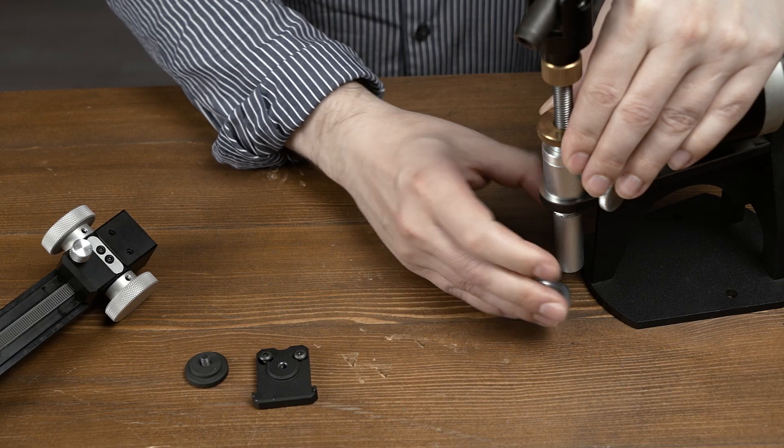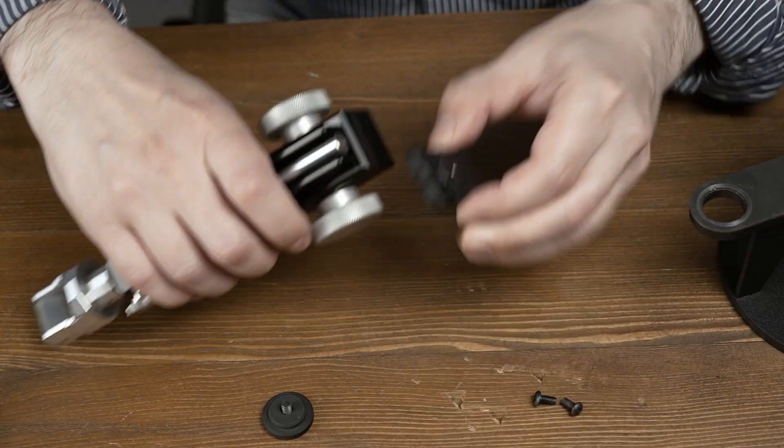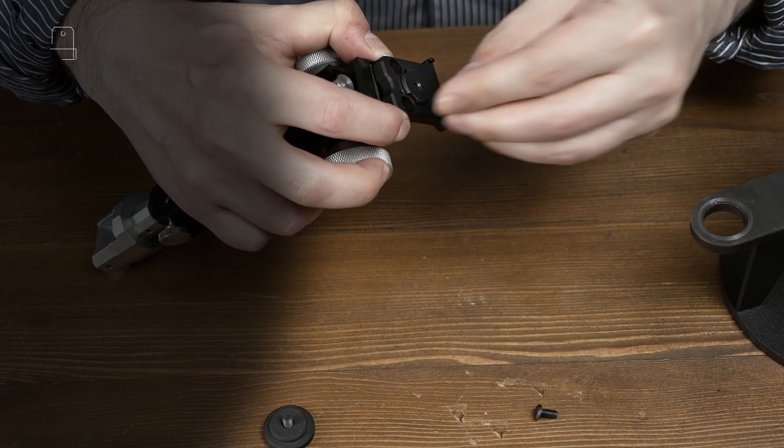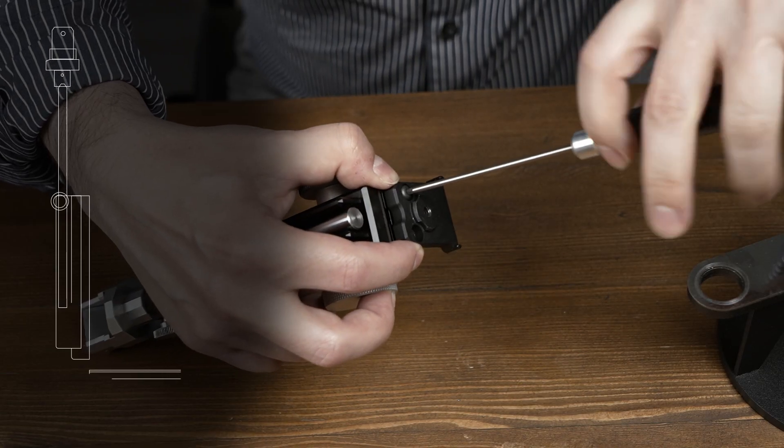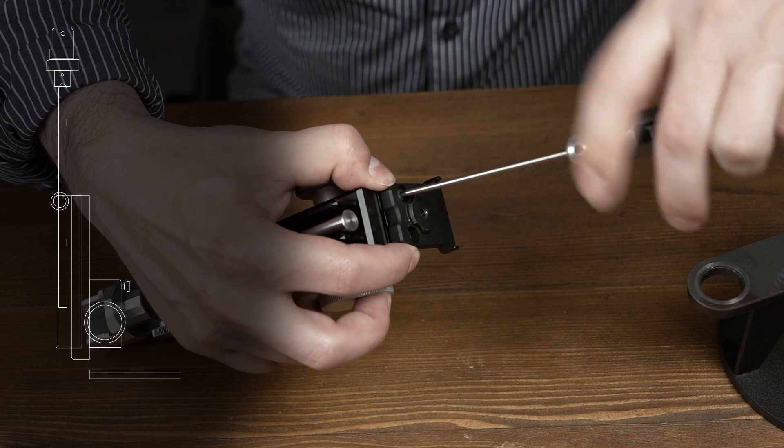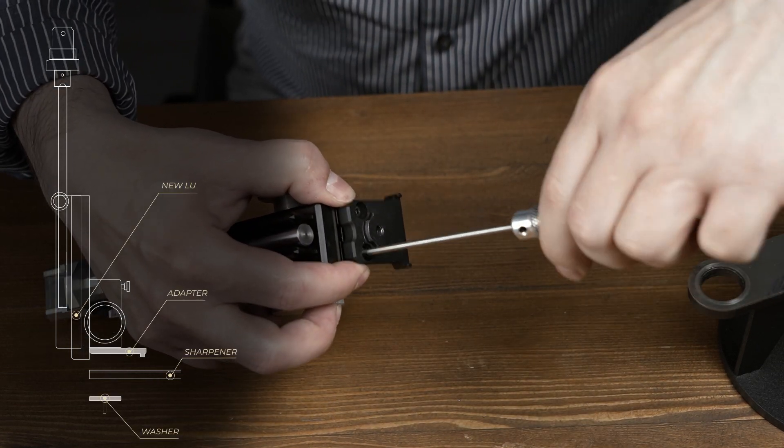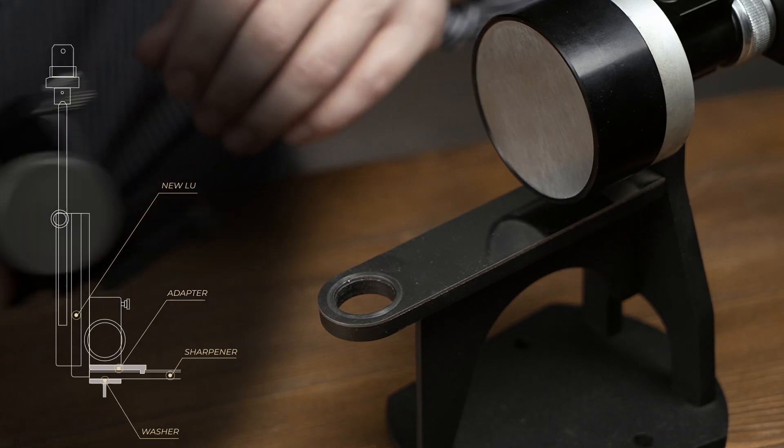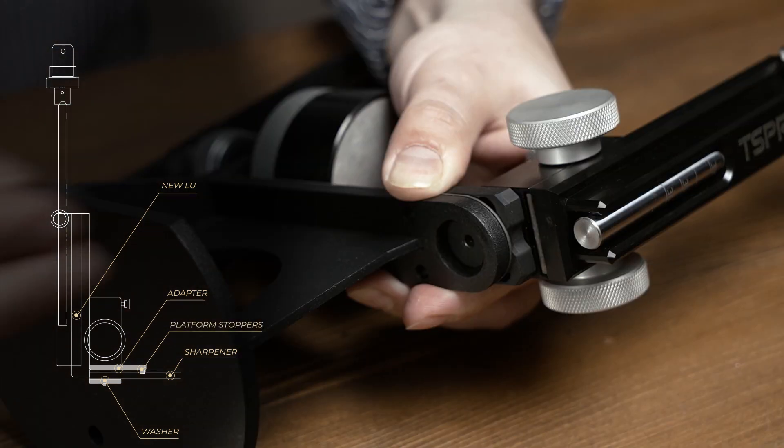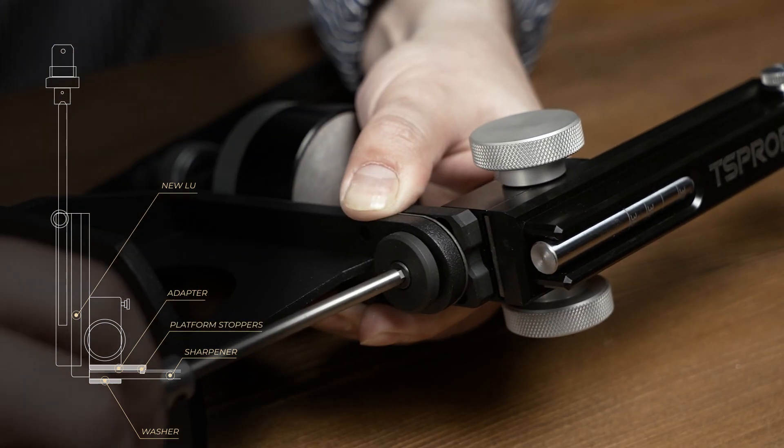To set the updated lifting unit, first take out the old one and then set the platform adapter to the lifting unit with the screws. Take into account that the platform stoppers must be in the same position. Set the lifting unit up and then tighten the screw and washer with the 4mm hex key.